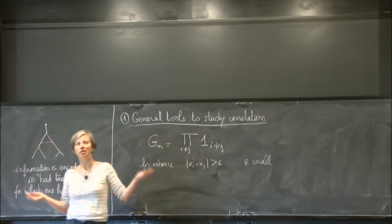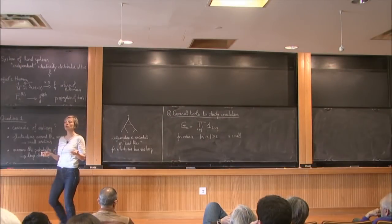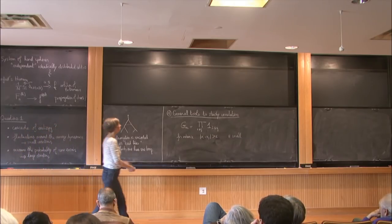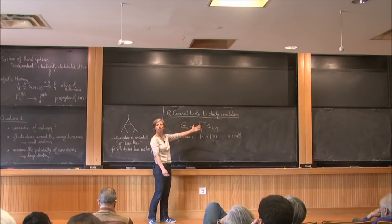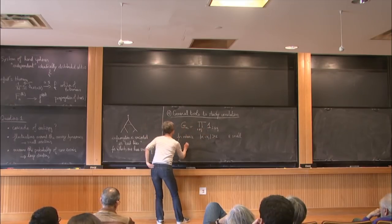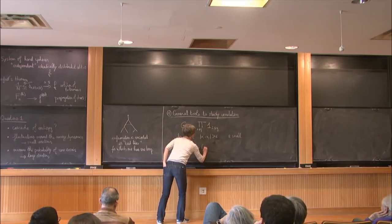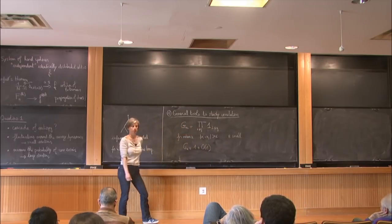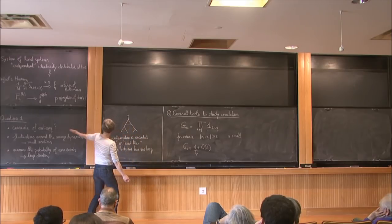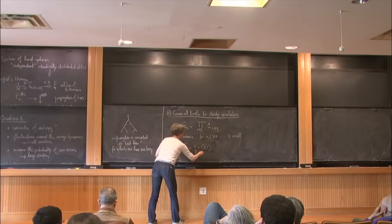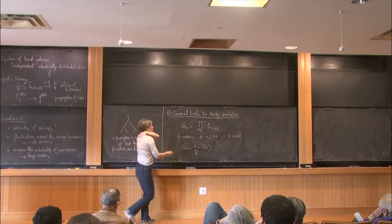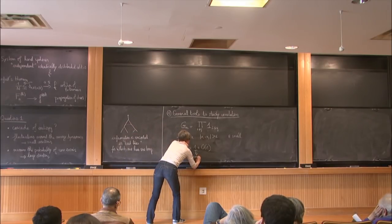This is a symmetric function for all i and j between 1 and N. If epsilon is very small, of course if it's zero it's just one. If epsilon is very small you expect it to be almost one. So in first approximation, g_N will be one plus something of the order of epsilon. This is the leading order.